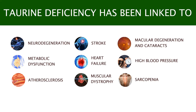It should be no surprise that taurine deficiencies are implicated in numerous disease states, including neurodegeneration, stroke, macular degeneration and cataracts, metabolic dysfunction, heart failure, high blood pressure, atherosclerosis, muscular dystrophy, and sarcopenia.